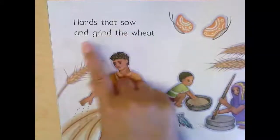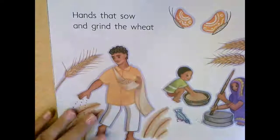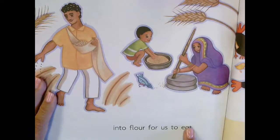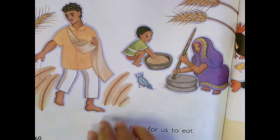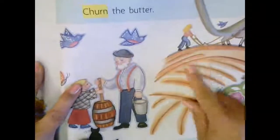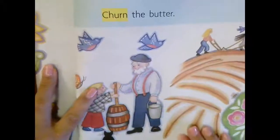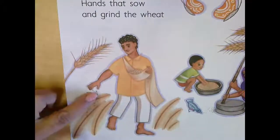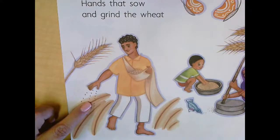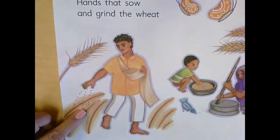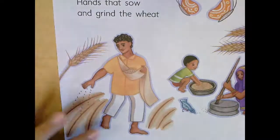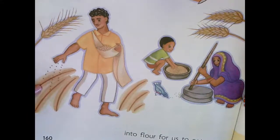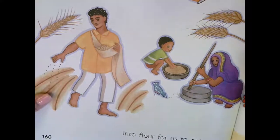"Hands that sow and grind the wheat into flour for us to eat." I asked myself why was the woman plowing the field. On this page we see the man throwing seeds — that's what we call sowing seeds. He's planting those seeds, and I think the woman was plowing the field to plant the wheat seeds. She was going to use that to grow the wheat, and then they'll make the flour. Flour is what cookies are made of.